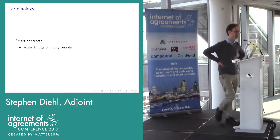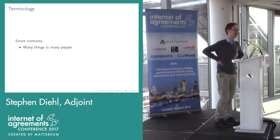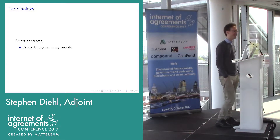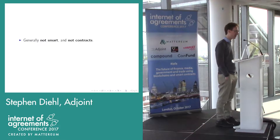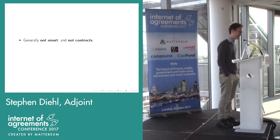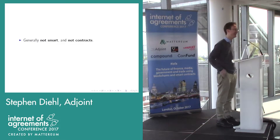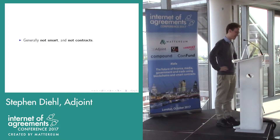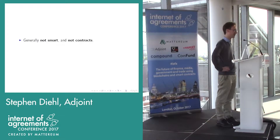Let's start with some terminology. Smart contracts — they are many things to many people. But generally, they're usually not smart and they're usually not contracts. Smart contracts are effectively programs that run on the blockchain in most definitions. But generally, they're about simple pieces of logic. Generally, they're not legal contracts.